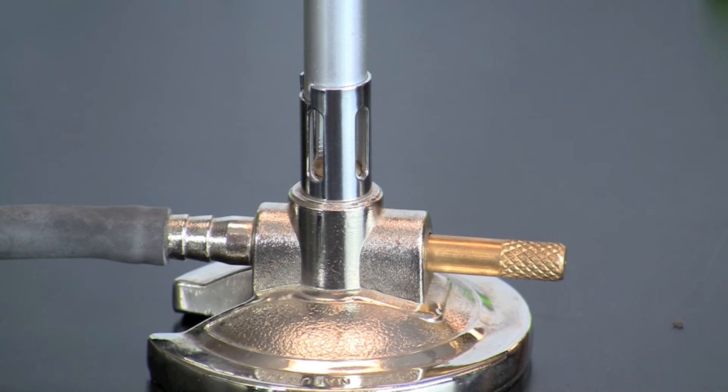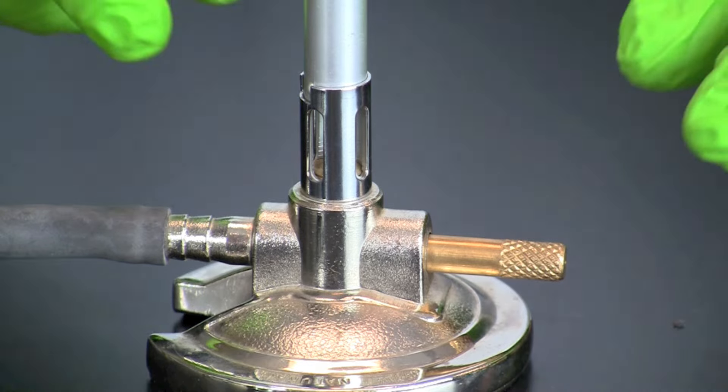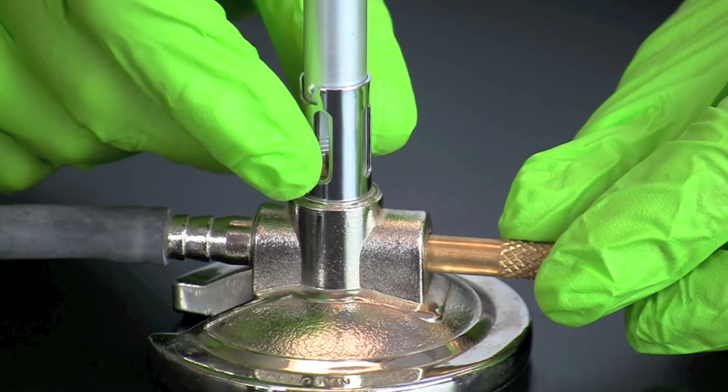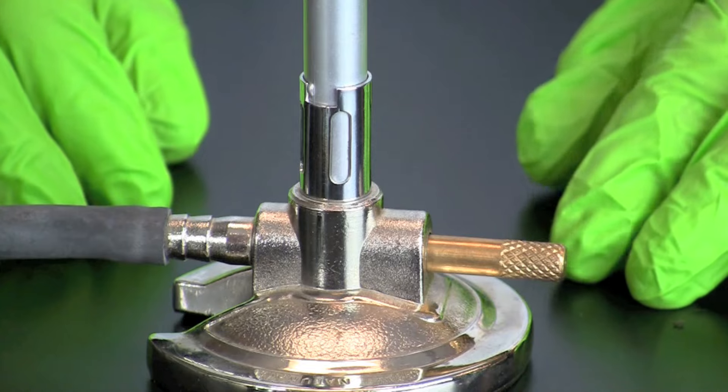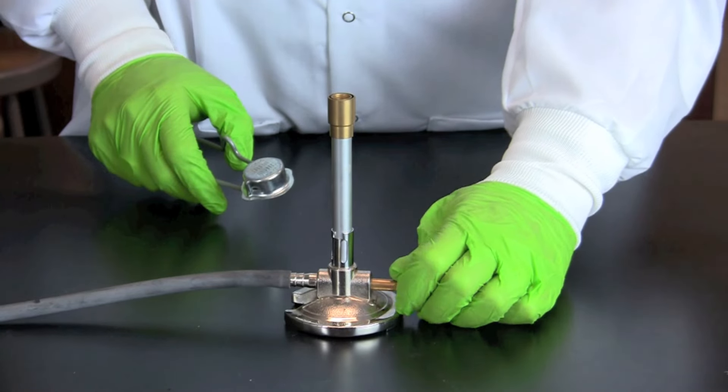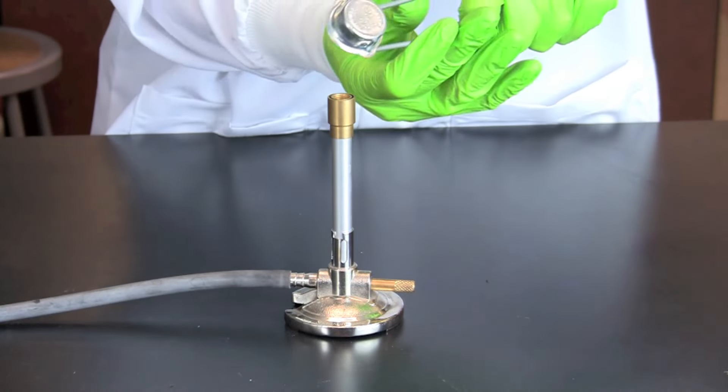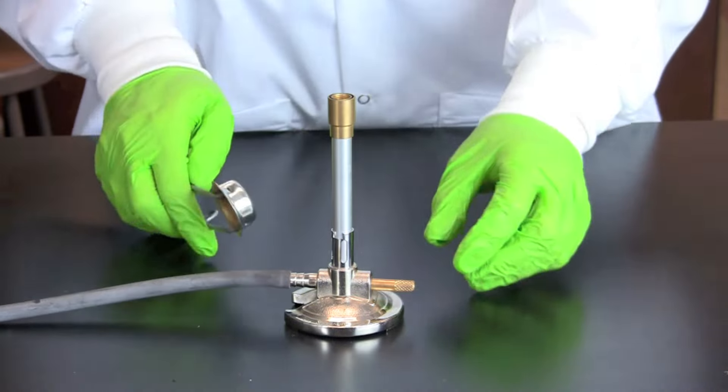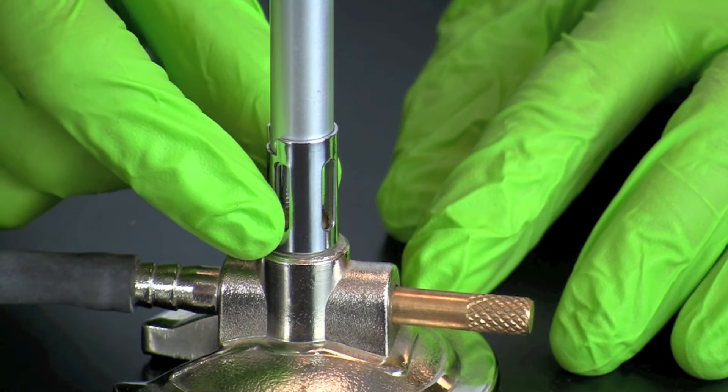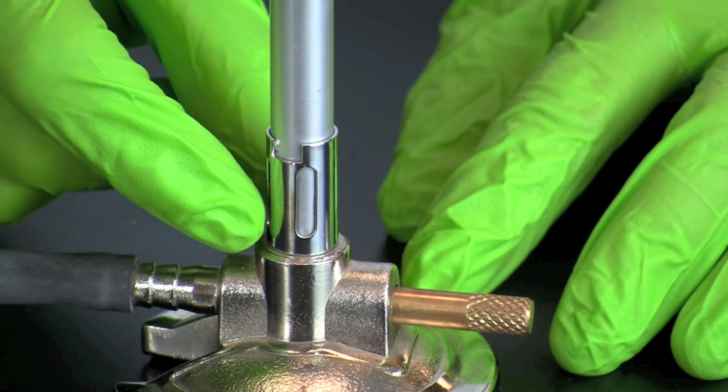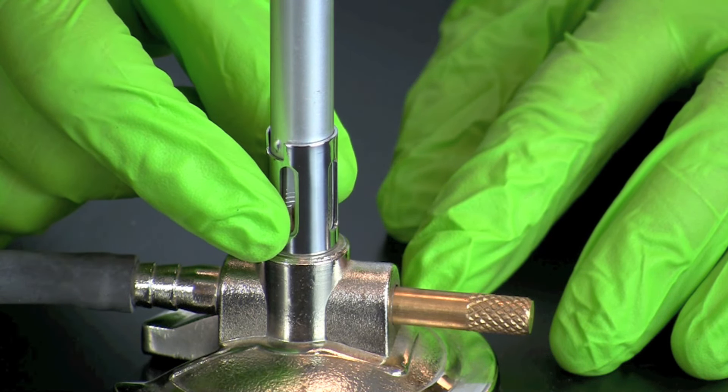To light a Bunsen burner, start by closing the valve at the base by rotating the collar so that the vents are covered. Then slowly turn on the gas. Once you hear the gas, ignite the burner and set the height of the flame by adjusting the amount of gas. The temperature of the flame can be adjusted by rotating the collar to control the flow of oxygen.